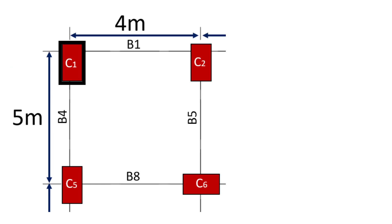We have already seen that the dimension of the column perpendicular to B4 will need to resist a greater moment than the one perpendicular to B1. Therefore, the depth of column 1 will be kept perpendicular to the span of B1. Hence, the assumed orientation of column 1 is absolutely perfect.